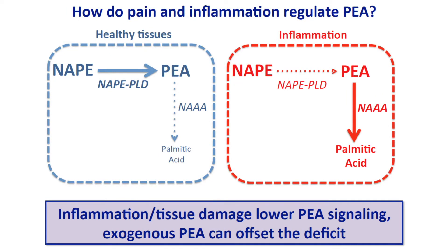In healthy tissue, there is a lot of PEA. In inflammation and in painful states, PEA is much less.